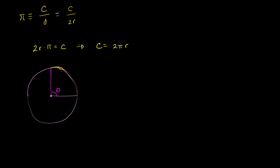So let me show what I'm talking about. This arc length, if the radius is r, what is the length of this arc? We know the entire circumference is going to be 2πr. So what is just this arc length? Assuming this is a fourth of the circle, it's going to be 2πr over 4, which is the same thing as π/2 times r.